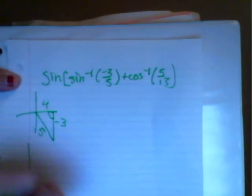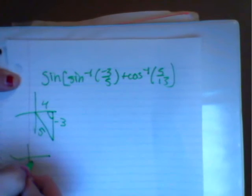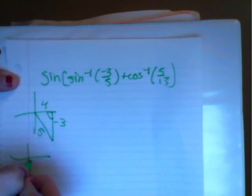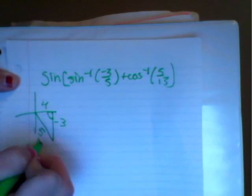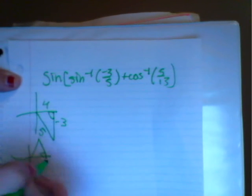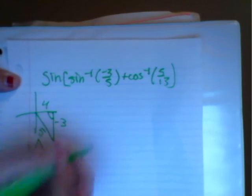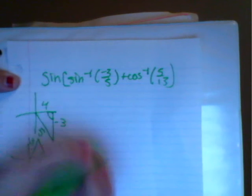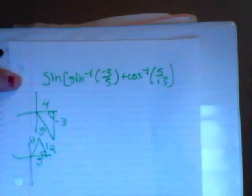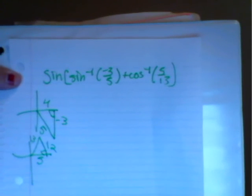And then we're going to make another triangle for the cosine of 5/13. The adjacent side is going to be 5, the hypotenuse is going to be 13, and the opposite side is going to be 12. So since this is sine,